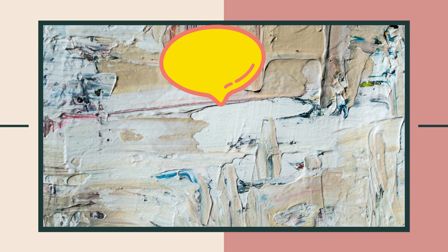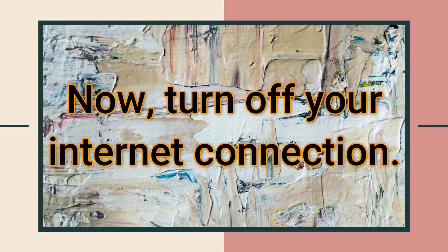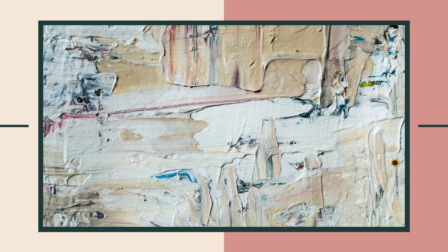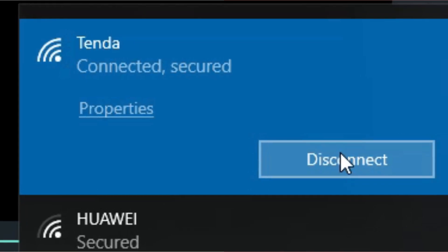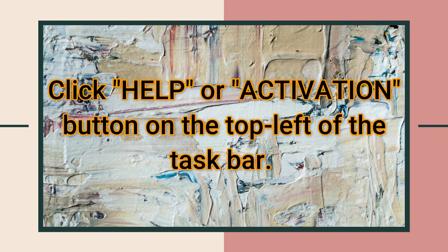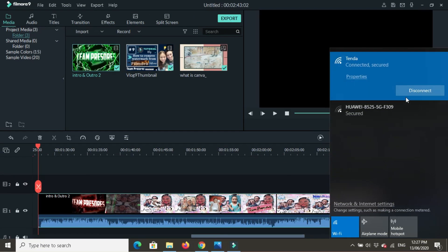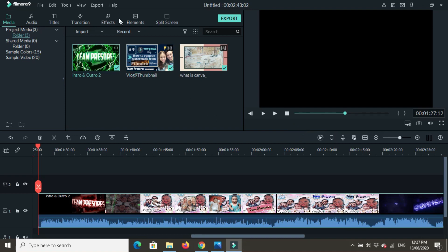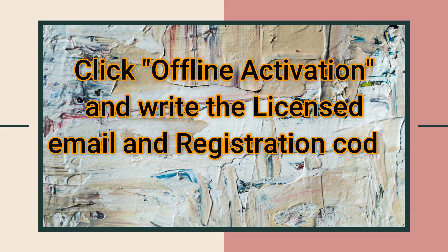Step 4. Open Filmora software. Turn off your internet connection. Click Help or Activation button on the top left of the taskbar. Click Offline Activation and write the License, Email, and Registration Code.